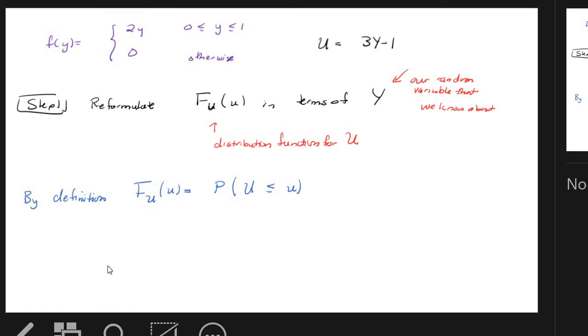My capital U, my little u's look the same, so I apologize for that. But this is the formal definition of a distribution function from your book. So you take that U, and you replace it with what the relationship is with the original random variable. So transform that to y's.